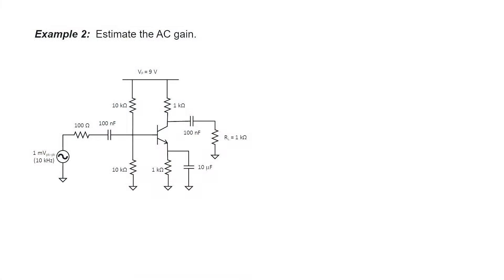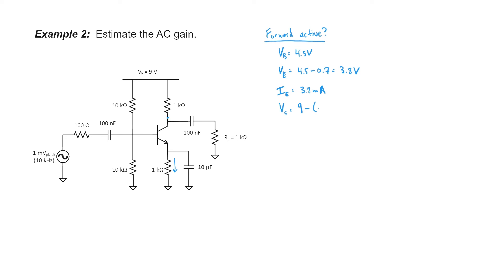Let's try another example. As before, let's start by verifying that the transistor is properly biased in the forward active mode. My base voltage should be halfway down from 9 volts — it's an even voltage divider through those two 10 kilohm resistors. My emitter voltage is just 0.7 volts below that. My DC emitter current all goes through that 1 kilohm resistor: 3.8 divided by 1 kilohm is 3.8 milliamps. I can then find my DC collector voltage, which works out to be 5.2 volts. The collector is higher than the base, and the base is higher than the emitter — the transistor is in the forward active mode.